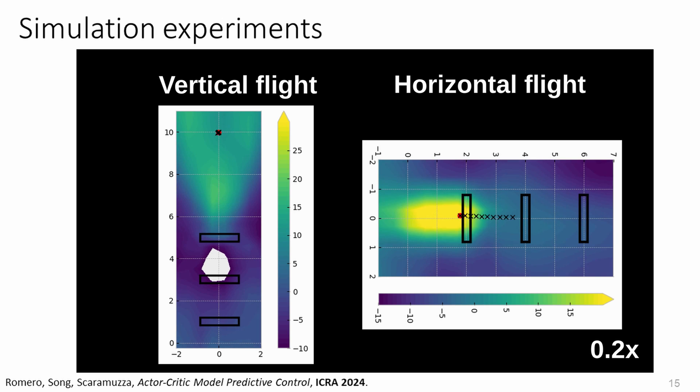In these illustrations, we show the evolution of the value function learned by the critic network. When a gate is successfully passed, the region of expected high rewards shifts to guide the drone towards the next gate. This can be seen as a form of mode-switching behavior that emerges from the binary nature of the reward function and that is often hard to encode in a MPC.